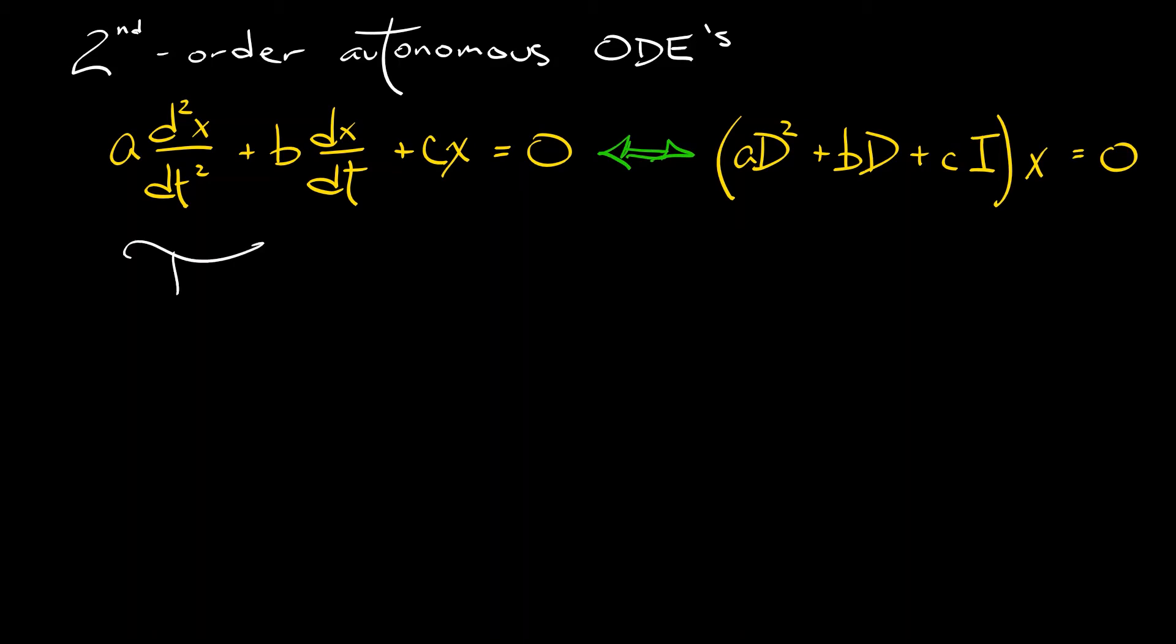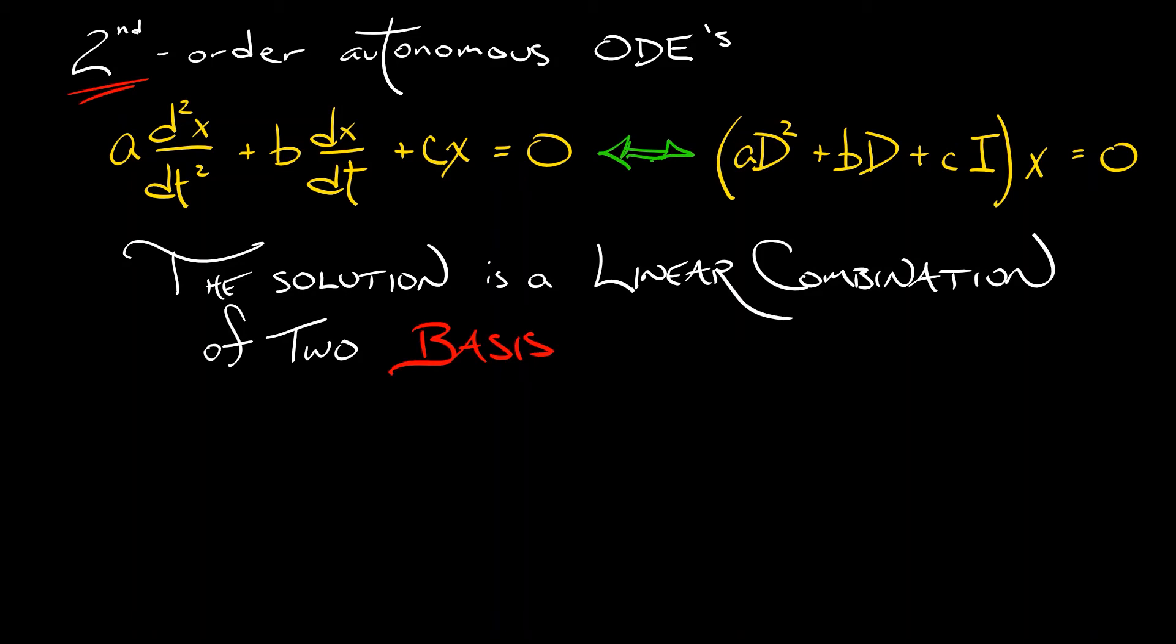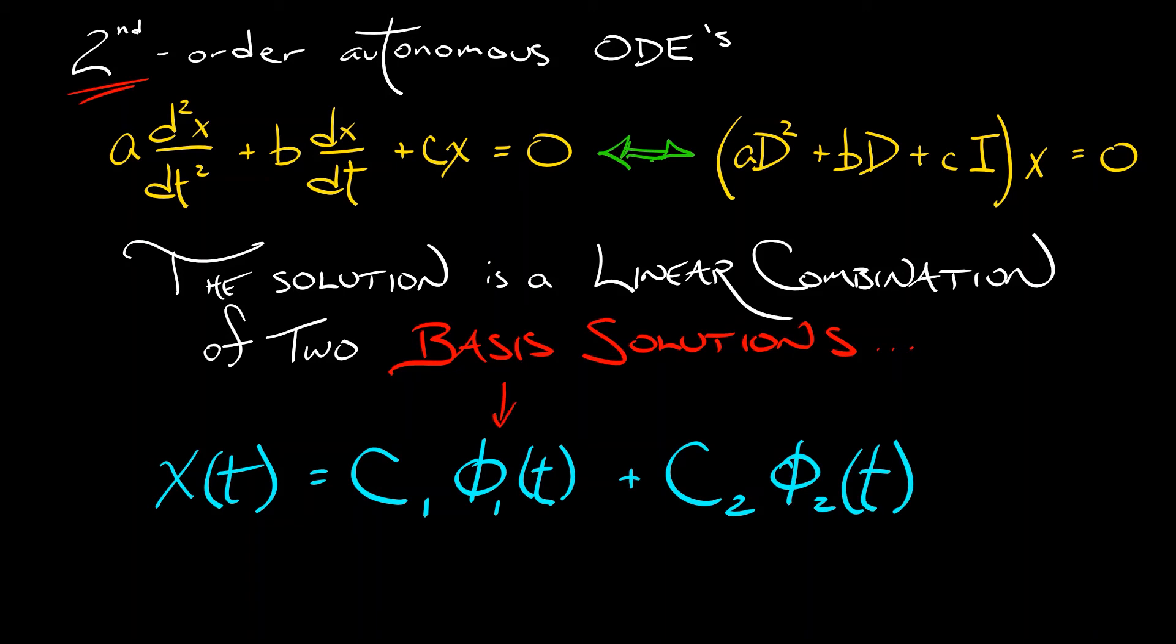Now you've probably seen these before in a different course, and you may have learned the solution to these. The solution to such second-order equations is a linear combination of two basis solutions. So the solution x of t is going to be of the form c1 times phi1 of t plus c2 times phi2 of t, where phi1 and phi2 are these basis solutions, and c1 and c2 are constants. These are constants that depend on the initial conditions.